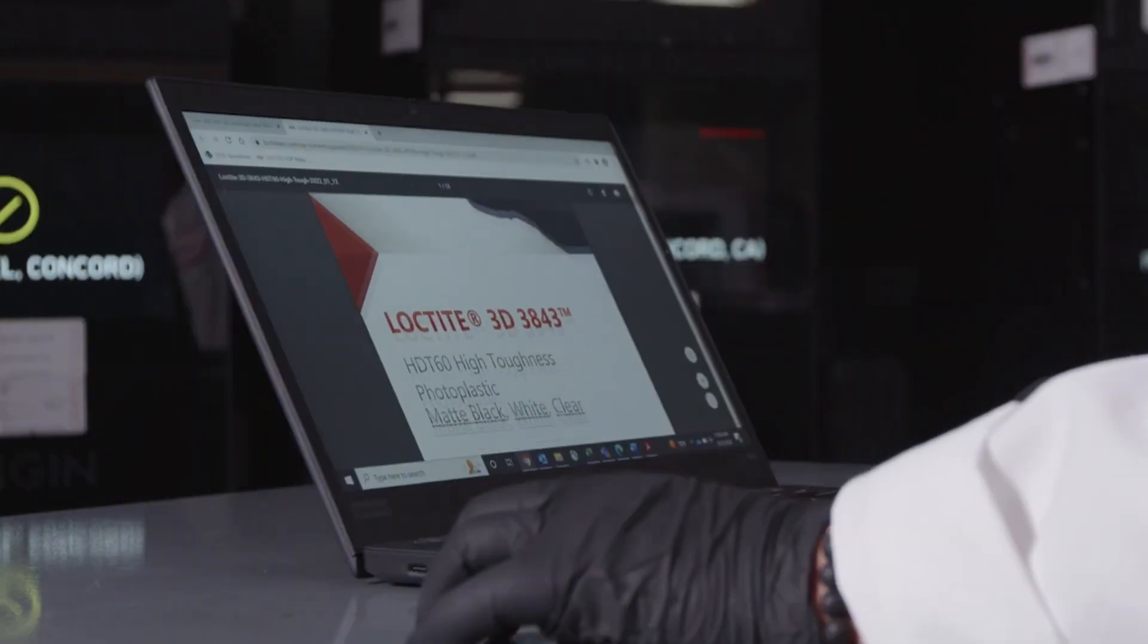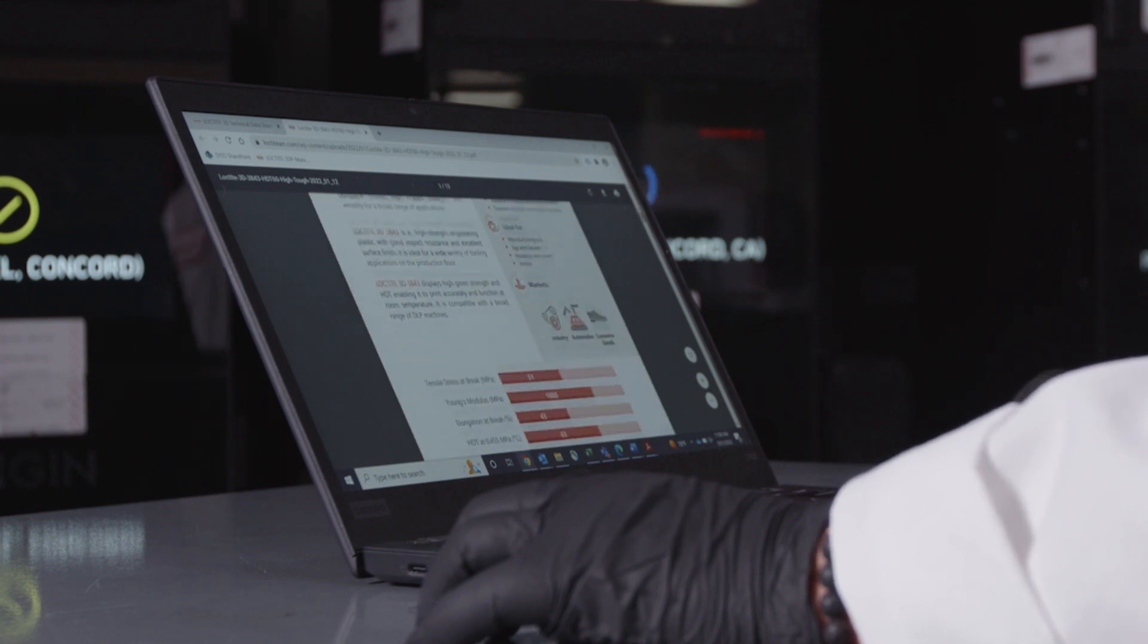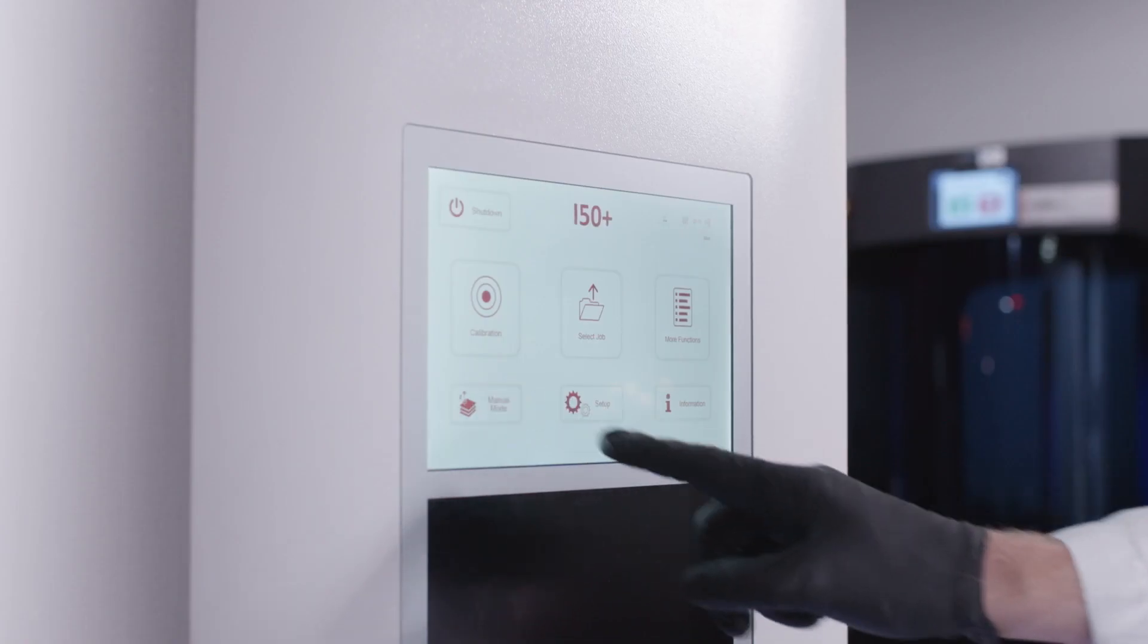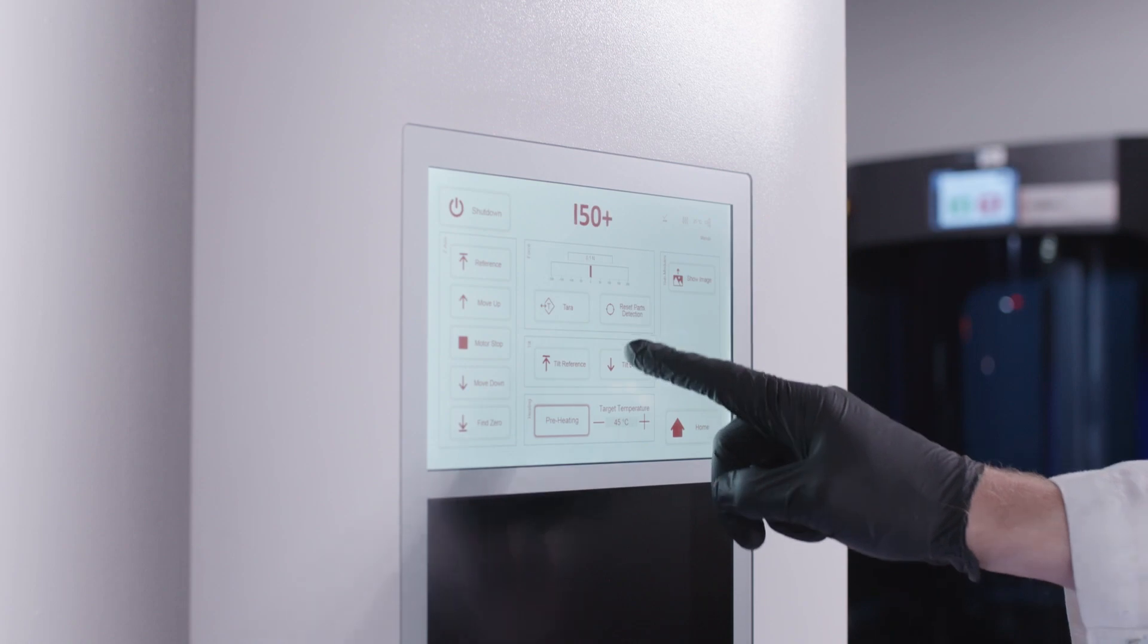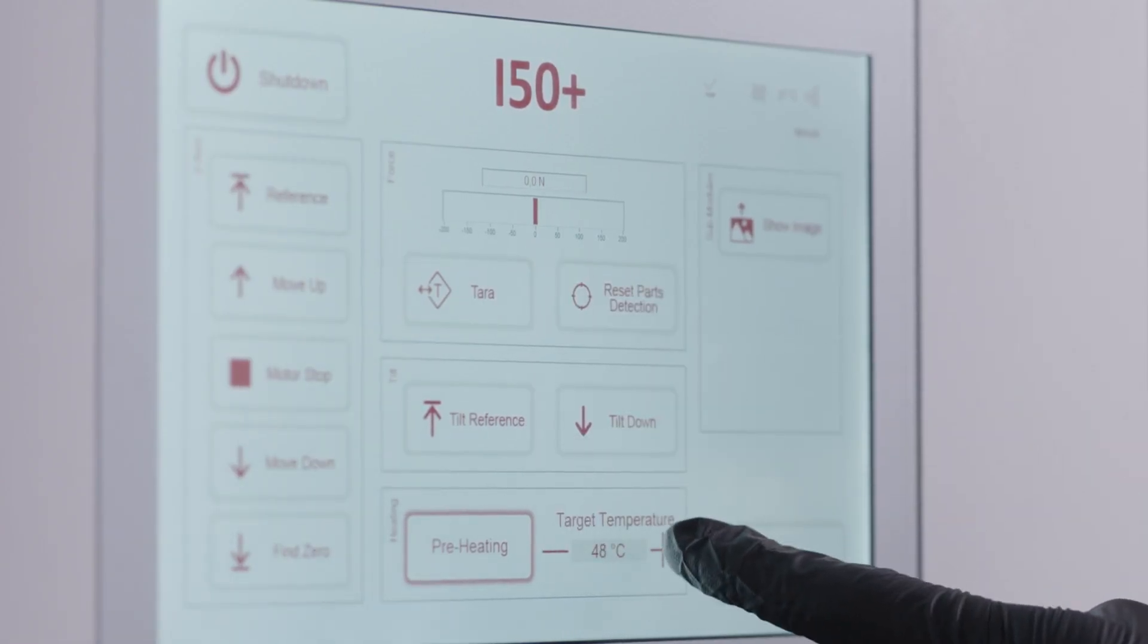To achieve the best results, find the validated workflow for your printer on LoctiteAM.com. With the workflow guidance available, you can begin adjusting the printer settings according to the document. Now that the printer settings are adjusted, the next step is to prepare the material.